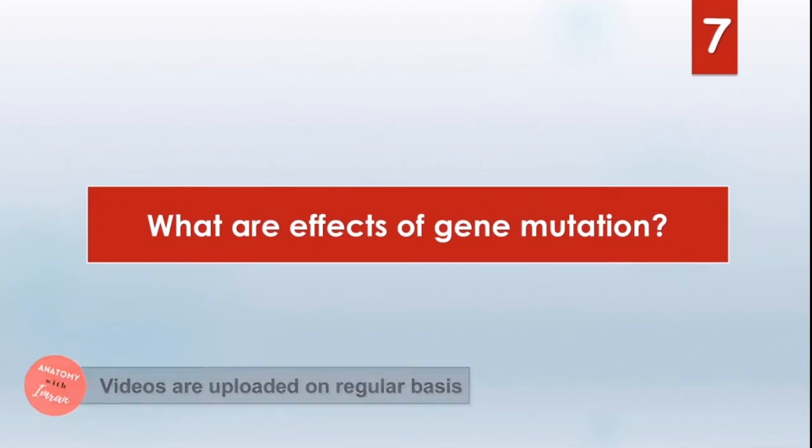Next question is, what are the effects of these gene mutations? Due to gene mutation, the formed mRNA will be defective, isn't it? And this defective mRNA will form defective proteins. So we will not be getting the product of the gene or we will be getting the partial product of the gene. This is known as loss of function mutation.